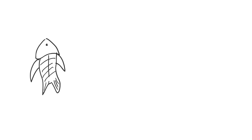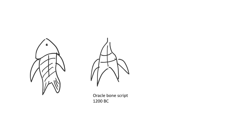Chinese morphemes are pictures. So if you want to write a fish, what you do is basically draw a fish. I don't know the pronunciation, but that doesn't really matter because that's a fish. And then in the Oracle script, it was written like this, about 3,000 years ago — it still has the shape of a fish, although it's a little bit changed.